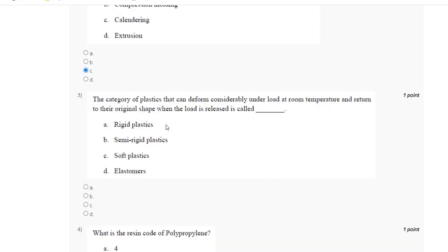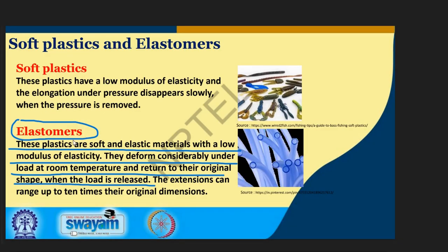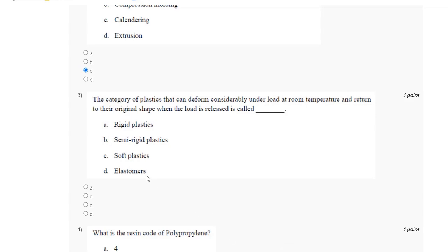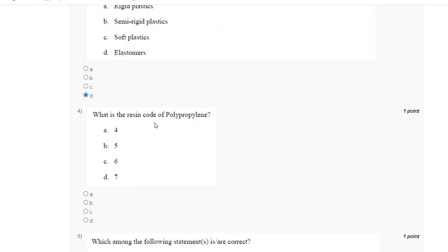Question number three: which category of plastic can deform considerably under a load at room temperature and return to their original shape when the load is released? The answer is elastomers. These plastics are soft and elastic materials with low velocity; they deform considerably under load at room temperature and return to their original shape. The correct answer for question number three is D, elastomers.